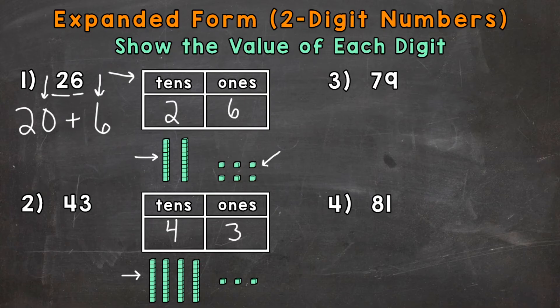So to recap, 4 tens, which has a value of 40, plus 3 ones, which has a value of 3. So that's our expanded form. We represented the value of the 4, which is 40, and the value of the 3, which is 3.